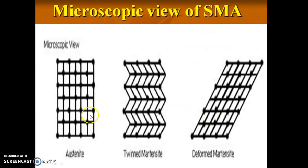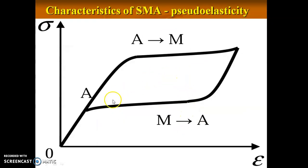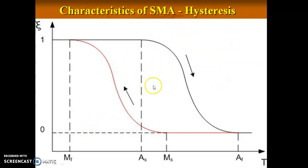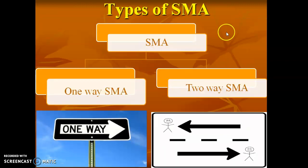There are different types of characteristics for SMAs. The first one is pseudo-elasticity — the property by which the material regains its original shape or size. At a certain point, the material has its elastic property and then returns to its original shape or size. Hysteresis is the property which gives the magnetic properties of the material. SMAs are classified into two types: one-way and two-way SMA.